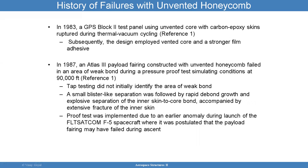In 1983, an unvented core failed during thermal vacuum testing. In 1987, an Atlas III also had a blister-like separation followed by rapid debond growth — the fairing had that issue and it failed during a proof test trying to simulate conditions at 90,000 feet that would be experienced in flight. The proof test did a good job of capturing the event.